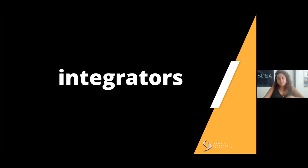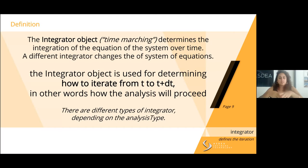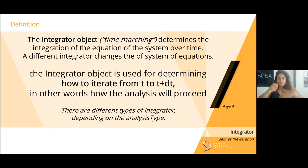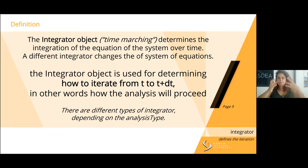Let's go to the main core of today: the integrator. The integrator object defines how you iterate from one time step to the next in your analysis — how the analysis proceeds from one point to the other. It's a discretization. In other FEM theories, this object is sometimes called the time marching object. It changes the way the system of equations of your analysis looks. There are different types of integrators depending on whether you do static or transient analysis.